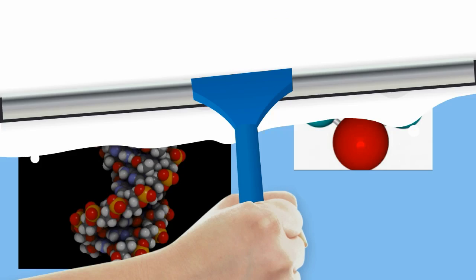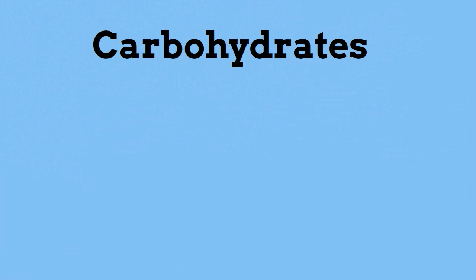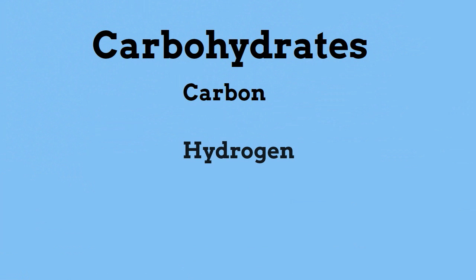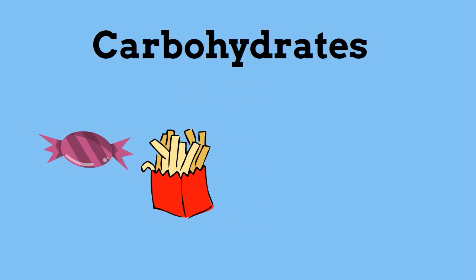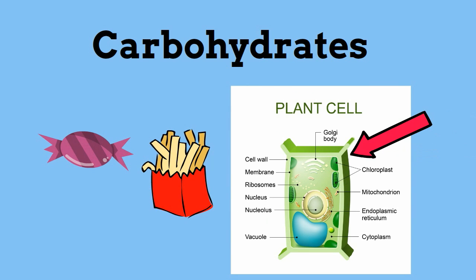Carbohydrates are composed of three elements: carbon, hydrogen, and oxygen. Carbohydrates store energy and provide structural support. Sugars and starches are carbohydrates. The cell wall of plants is composed of the carbohydrate cellulose.